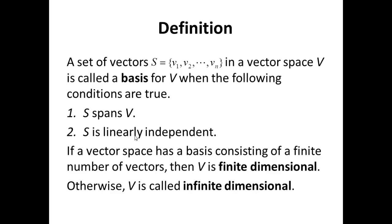Now, if a vector space has a basis consisting of a finite number of vectors, then we say V is finite dimensional, otherwise V is infinite dimensional.